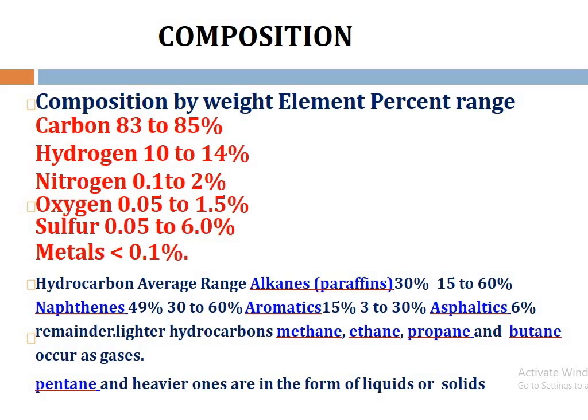The lighter hydrocarbons — methane, propane, and butane — exist in the form of gases. Pentane and heavier hydrocarbons are in the form of liquids or solids.